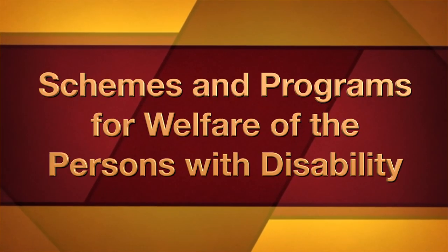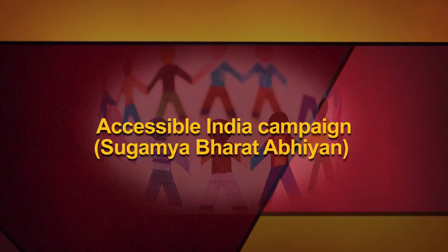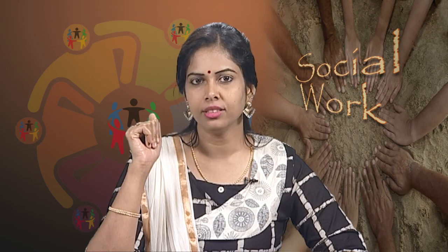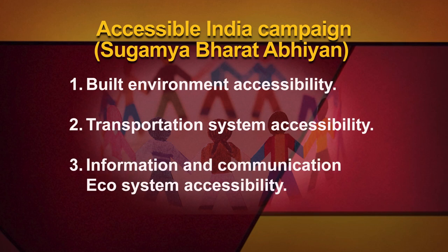Schemes and Programs for Welfare of Persons with Disability: (1) Accessible India Campaign — Sugamya Bharat Abhyan. The aim of the campaign is to enhance accessibility of built environment, transport system, and information and communication ecosystem for persons with disability. This campaign includes three components: built environment accessibility, transportation system accessibility, and information and communication ecosystem accessibility.